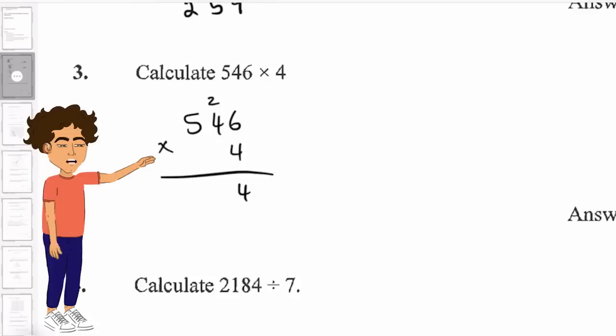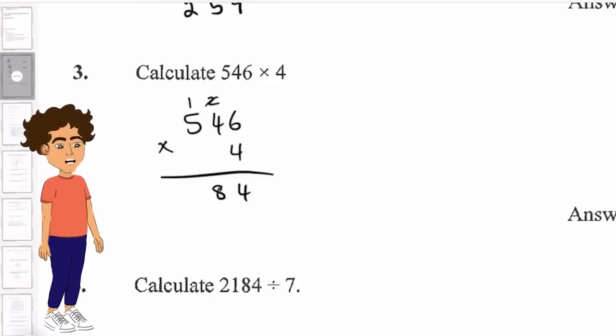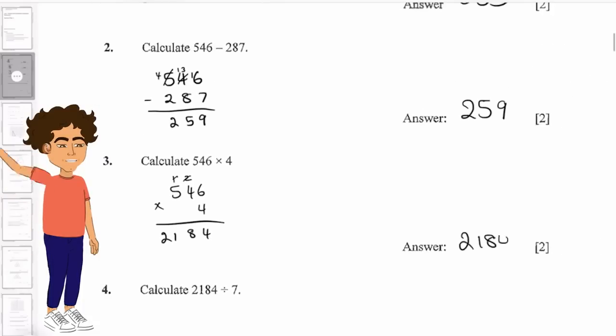4 times 4 is 16, plus 2 is 18. And then 5 times 4 is 20, plus the 1, which is 21. So all in all, we have 2184.